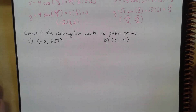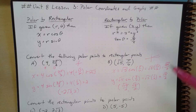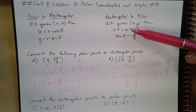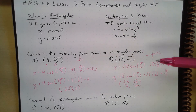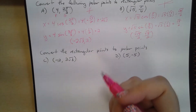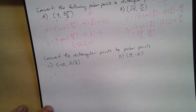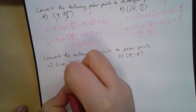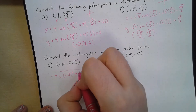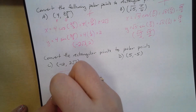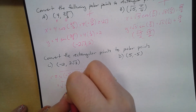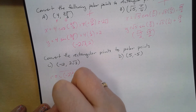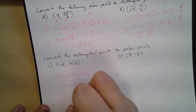Now let's convert some rectangular points to polar points. Here we have (−2, 2√3). To convert rectangular to polar, we use r² = x² + y² and tan(θ) = y/x. So r equals the square root of (−2)² plus (2√3)², which equals the square root of 4 plus 12, which equals the square root of 16, so r equals 4.